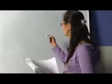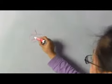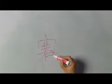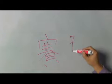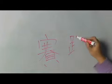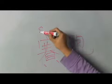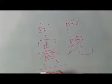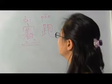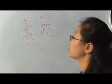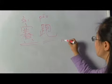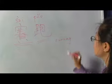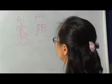The Chinese word 赛跑 means race. 赛 is a verb — it means to compete. 赛 is also a noun — it means competition or race. 跑 means running. So 赛跑 means race.